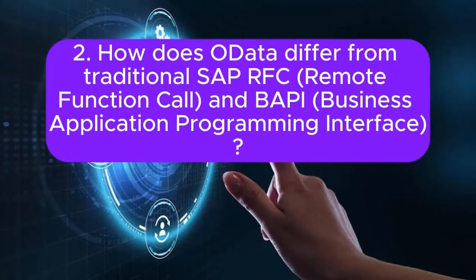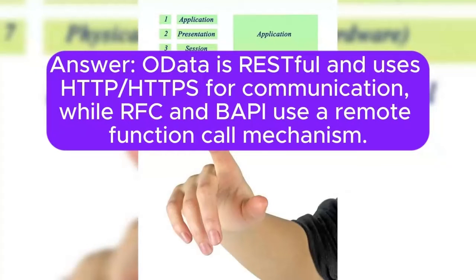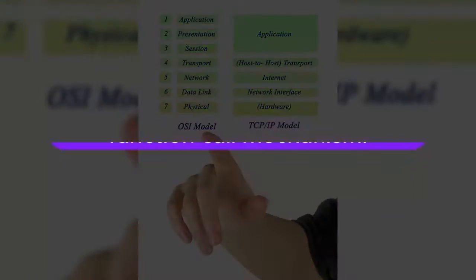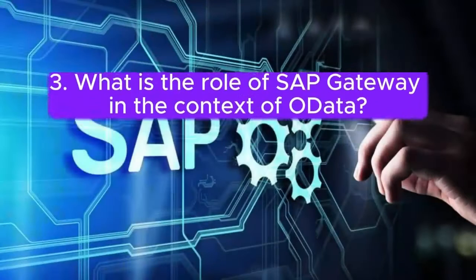Question 2: How does OData differ from traditional SAP RFC (Remote Function Call) and BAPI (Business Application Programming Interface)? OData is RESTful and uses HTTP/HTTPS for communication, while RFC and BAPI use a remote function call mechanism. OData provides a standardized, web-friendly way for data exchange, making it suitable for web and mobile applications.